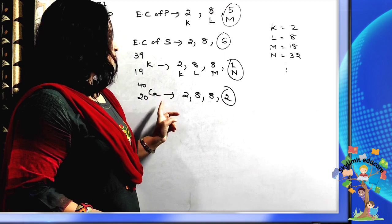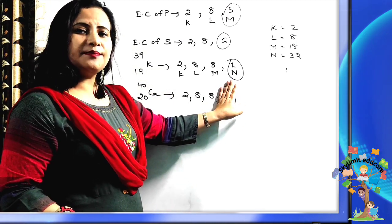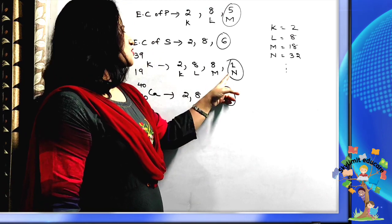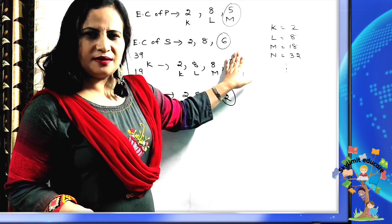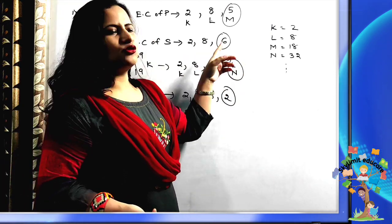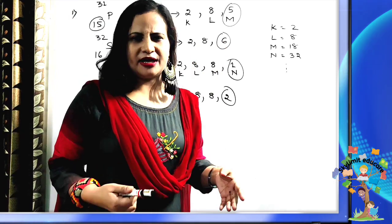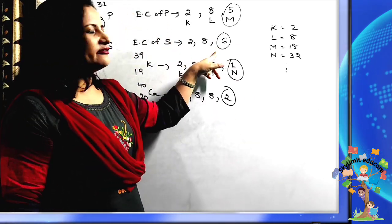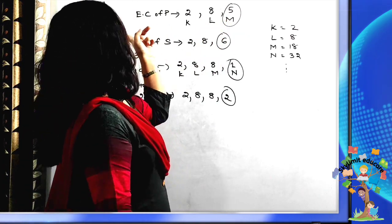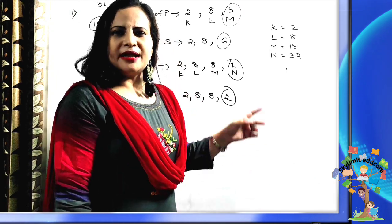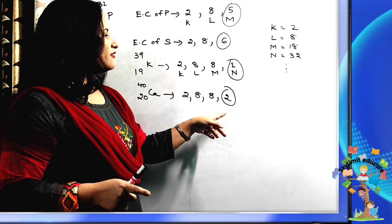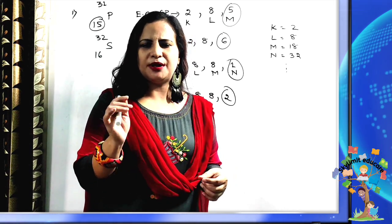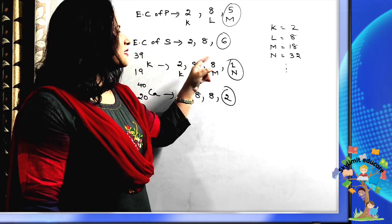From the valence electrons, we decide valency. Calcium will lose 2 electrons to fulfill the octet rule, so its valency is 2. Potassium loses 1 electron to become stable, so its valency is 1. Sulfur needs 2 more electrons — it is easier to gain 2 than to lose 6 — so sulfur gains 2 electrons and its valency is 2. Phosphorus needs 3 more electrons to complete the octet, so the valency of phosphorus is 3.